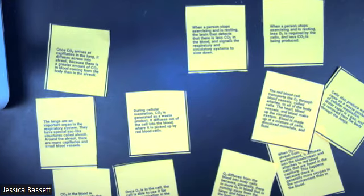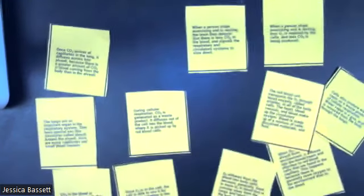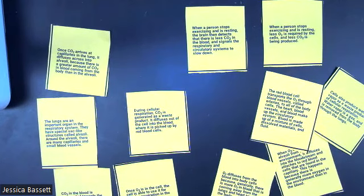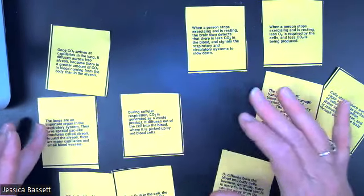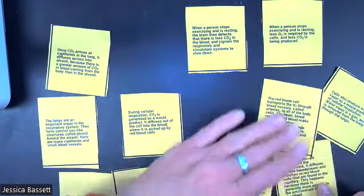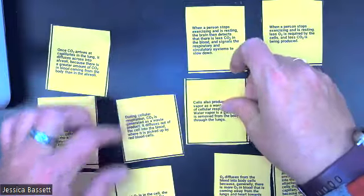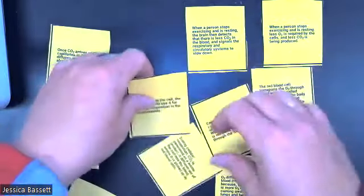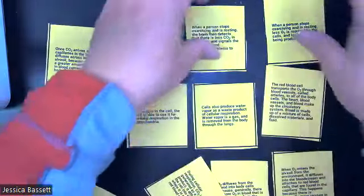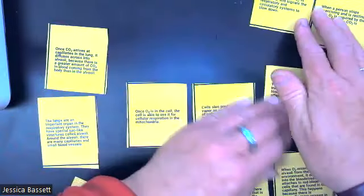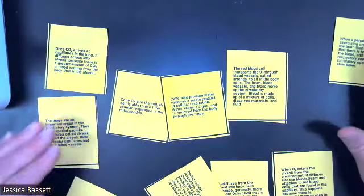Now I know that a lot of these are blurry. This works better now. So a couple of these, if you look, we have cells, we have cellular, we have oxygen in the cell. So we have a couple of things where it says where the person stops exercise. So I'm going to put those aside.